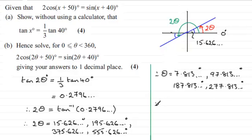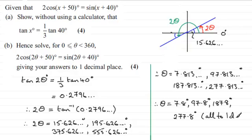And we've got to give our results now to one decimal place. So that's going to be 7.8 degrees, then 97.8 degrees, and then 187.8 degrees, and finally 277.8 degrees. And I'll put in brackets here, all to one decimal place, 1dp for short.